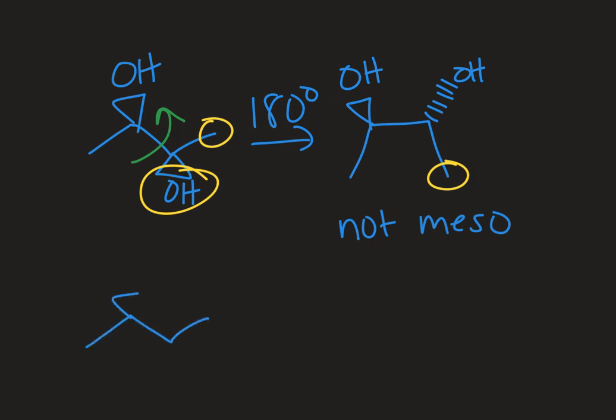However, if we look at another stereoisomer of this molecule, the one where in the kind of classic zigzag orientation, I have one OH out and one OH back, again, if I rotate 180 degrees here, now you can see that going about that bond, those are exactly lined up.